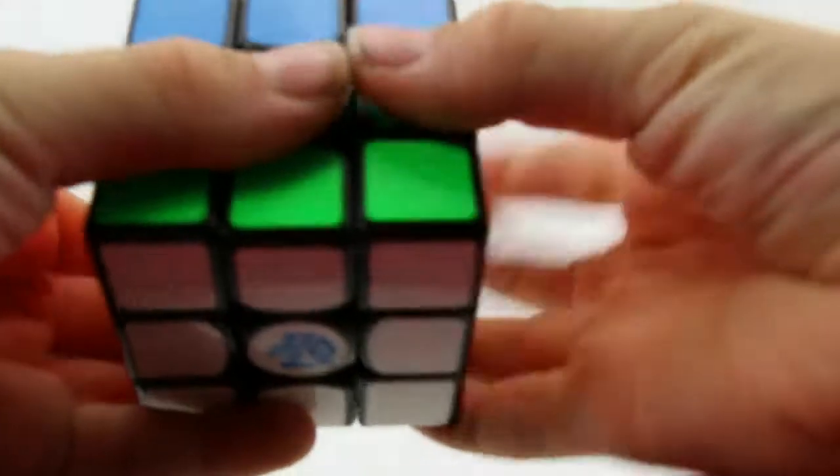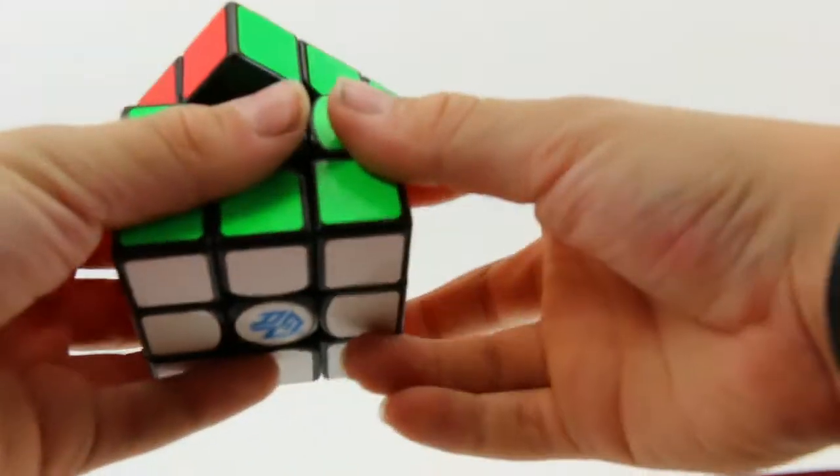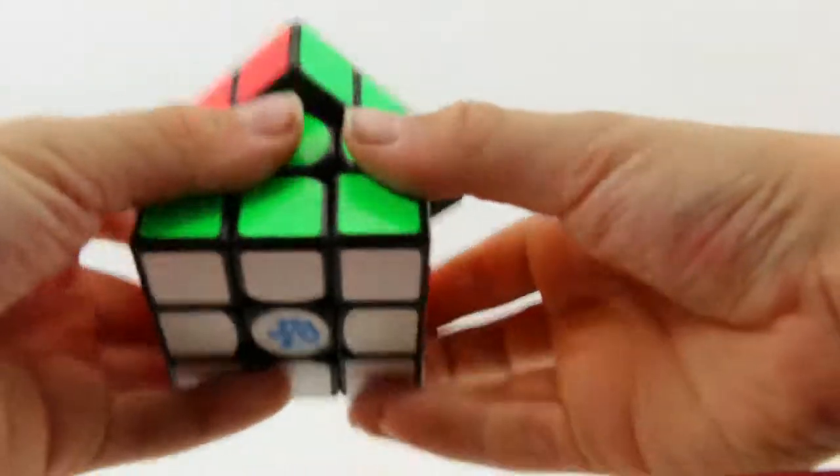We're going to 3x3. My main 3x3 is the Gan Air UM, which is a truly amazing 3x3. It's really nice, and I really, really like it. It's got a really nice feeling. I don't have the SM, but this is on Green Springs, and I really like its feeling.